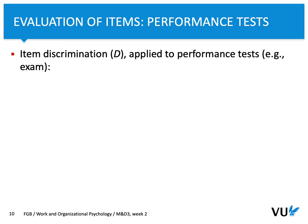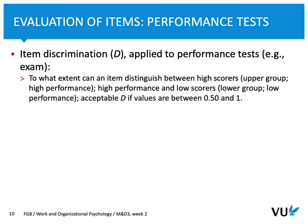Let's focus on discrimination. This indicator, item discrimination, is typically applied to performance tests — for example, something that can happen during an exam. Item discrimination refers to the extent to which an item can distinguish between high scorers, that's the upper group that has knowledge or specific skills, versus the lower group that performs at a low level and doesn't have much knowledge in the specific topic. When we want to calculate the discrimination index, we accept values between 0.5 and 1.